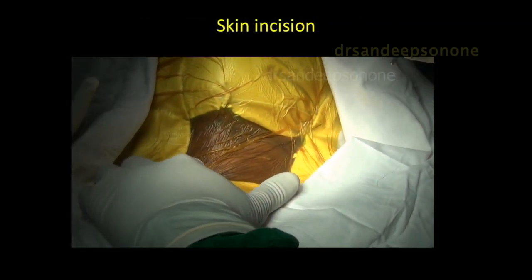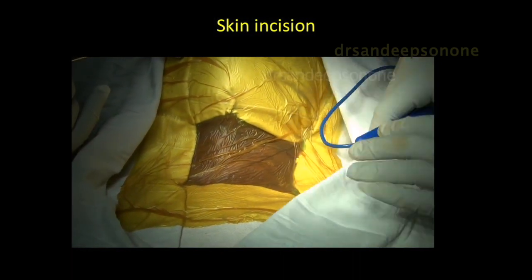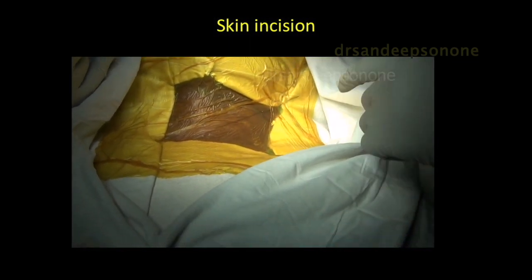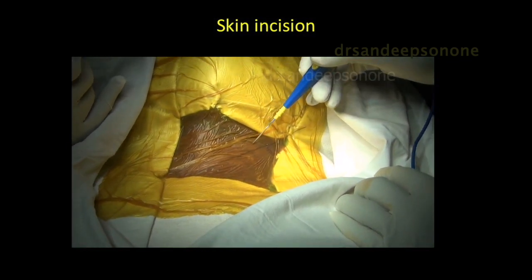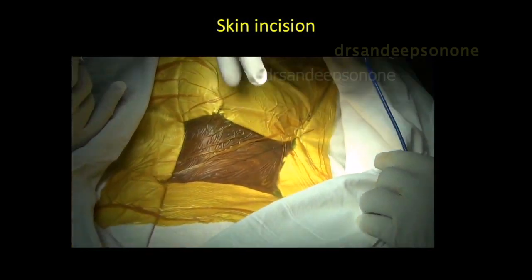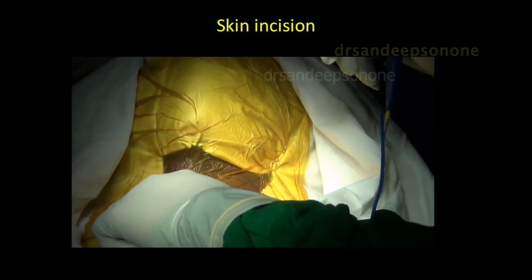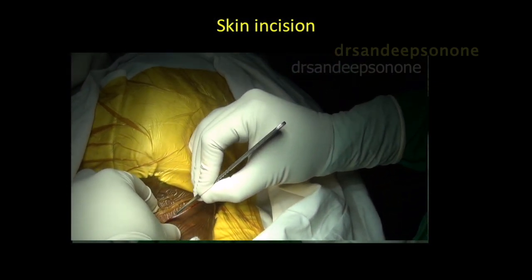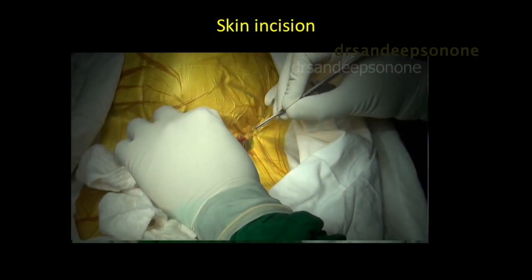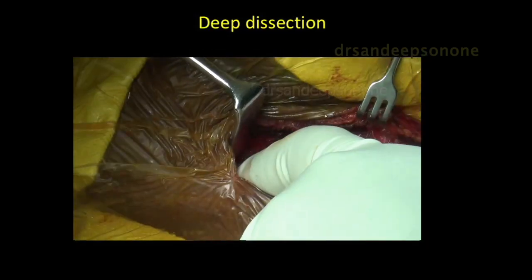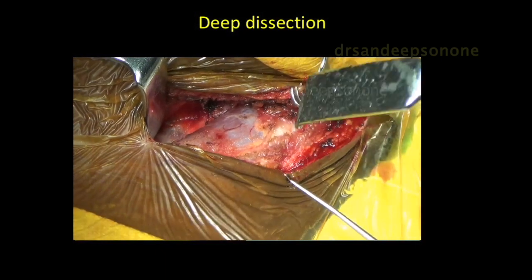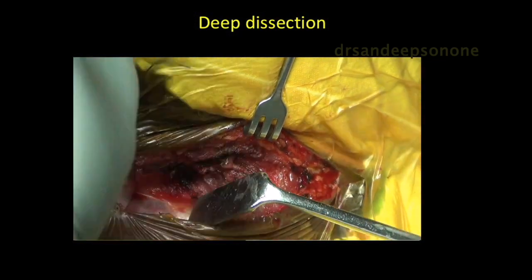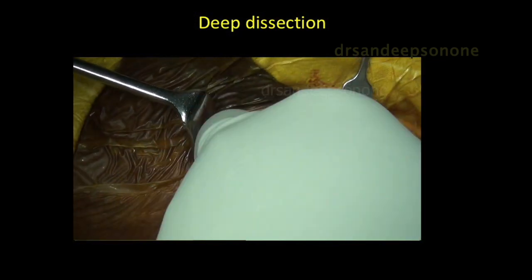The skin incision is a longitudinal one because we need a fair amount of retraction superomedially, and a transverse incision makes superior retraction difficult. The line joining the angle of the mandible with the sternal notch is the incision line. Once the incision is made, I usually start from the distal part of the dissection — pretty much the anterior approach we employ in the subaxial spine — and reach the prevertebral fascia through this approach.